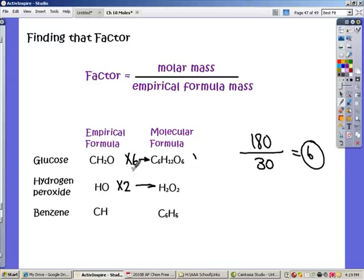And 180 over 30 is 6. See there, that's the same factor as what we saw that these were multiplied with here. So by taking the ratio of their masses, the mass of the molecular formula divided by the mass of the empirical formula, that will give me my ratio that I can use to multiply the empirical formula by to get what the molecular formula is.